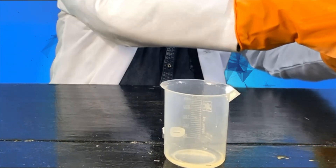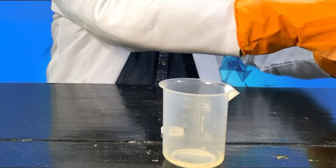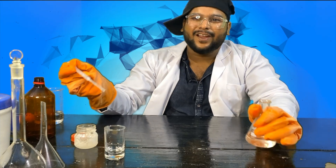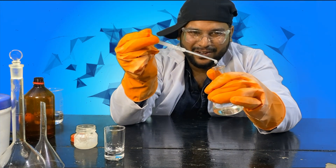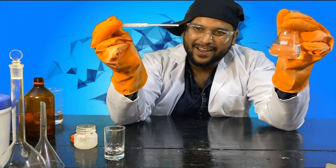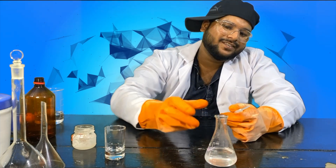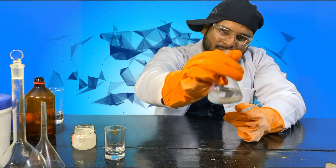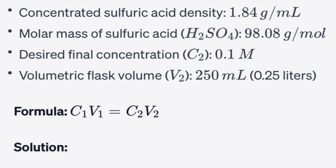This is our concentrated sulfuric acid. Chemistry is not just mixing liquids — it's a dance of numbers and precision. So let's do some math. This concentrated sulfuric acid has a density of 1.84 grams per ml. The molar mass of sulfuric acid is 98.08 grams per mole, and our desired final concentration is 0.1 molar.